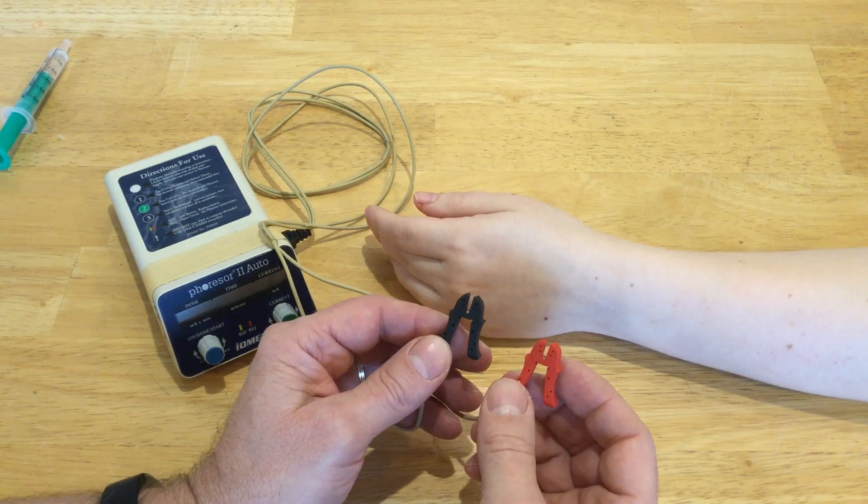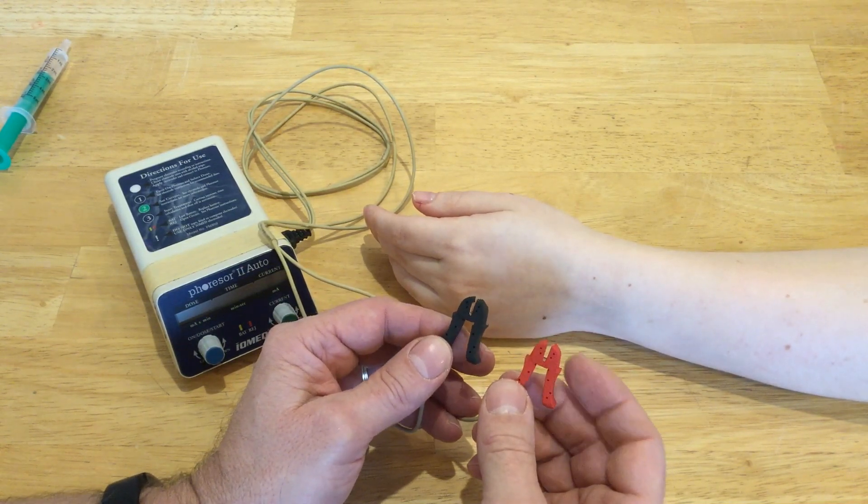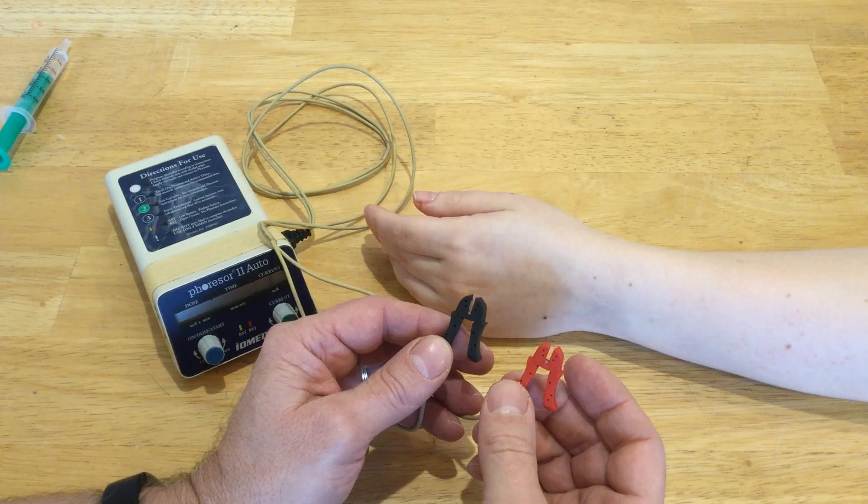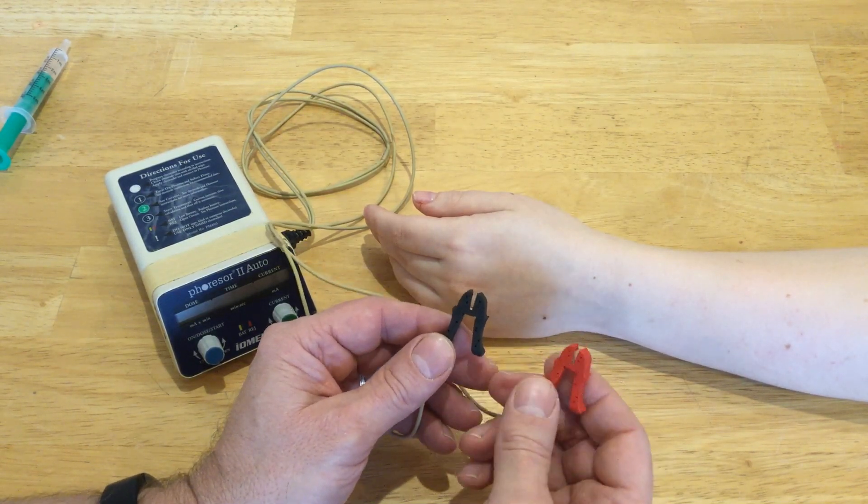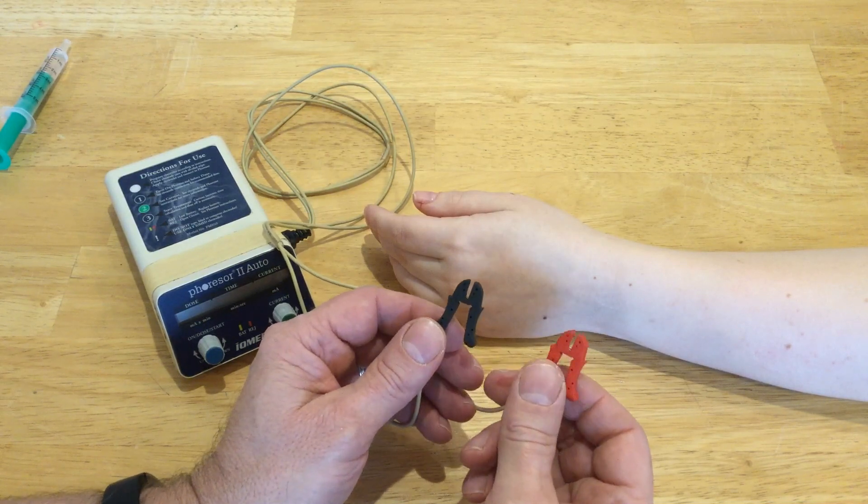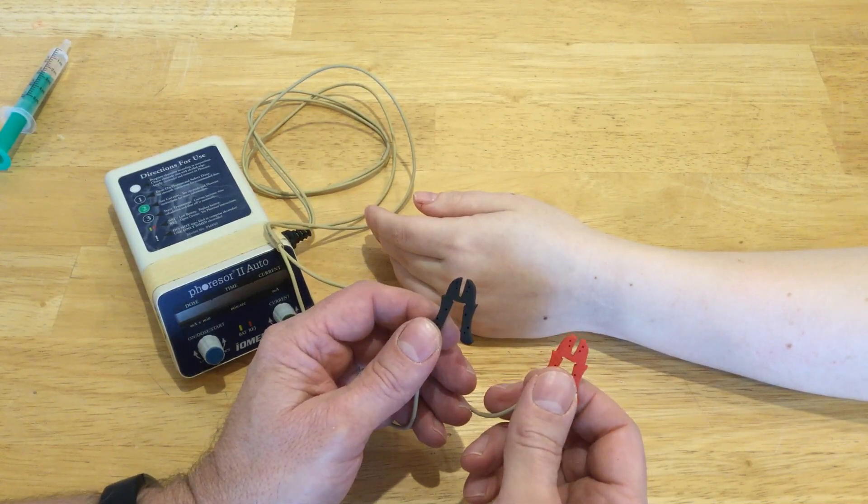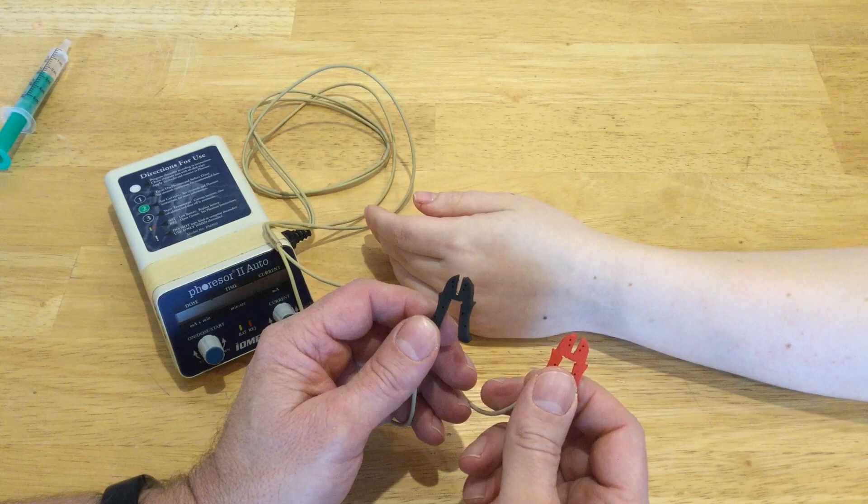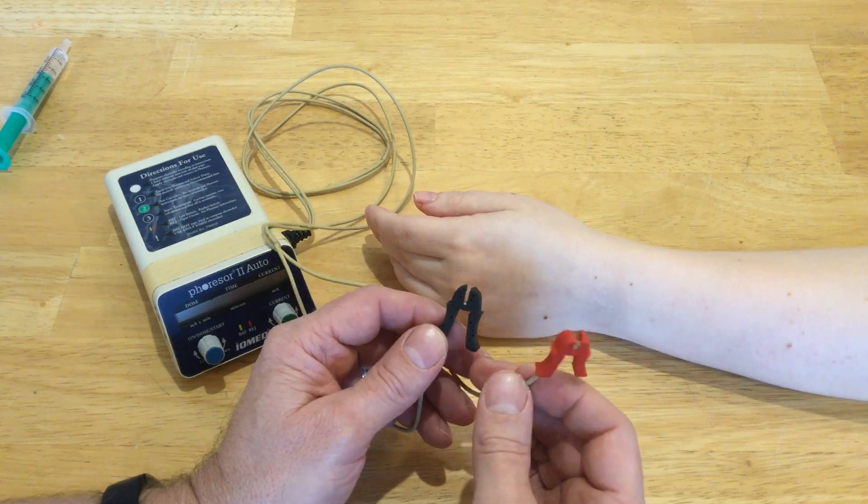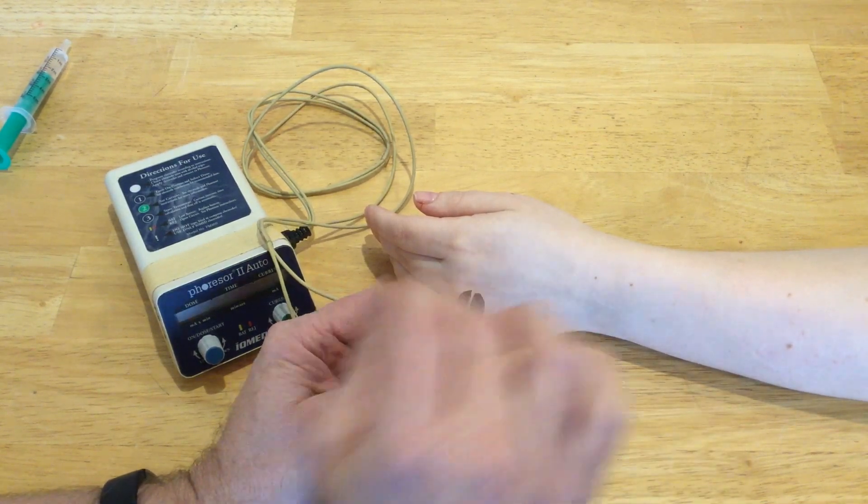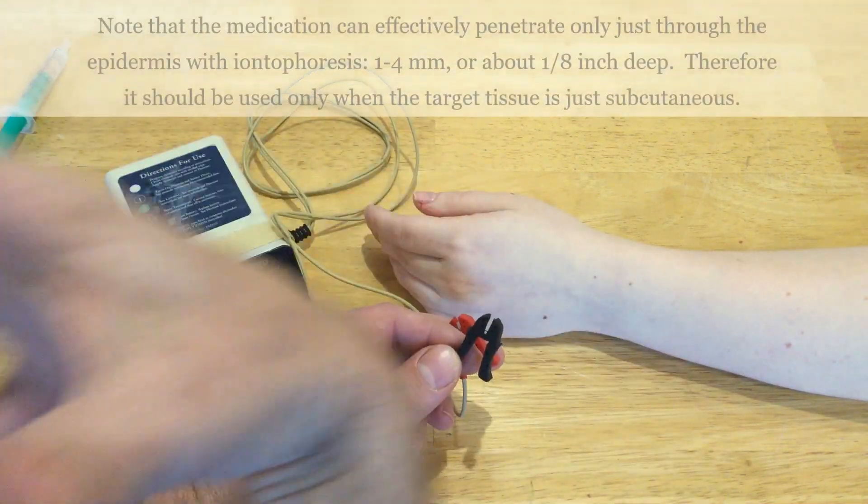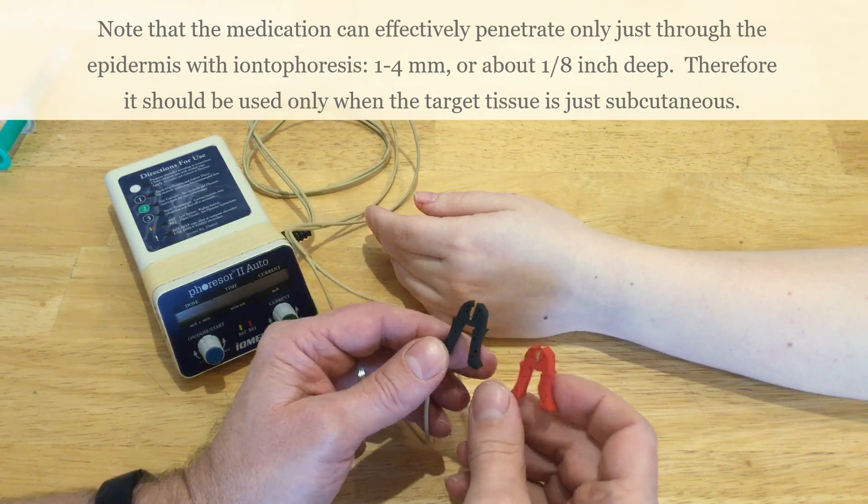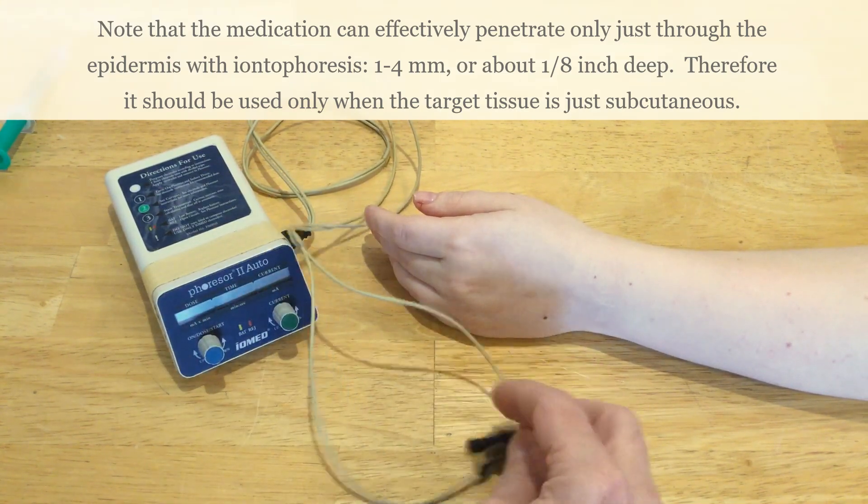Depending on the charge of your medication, you're going to put the medication on the electrode that has the same electrical charge as the medication, so that the electrode will repel it and push it through the skin. The other electrode, placed somewhere else, will draw it into the body. That's how this works.